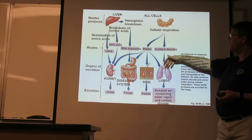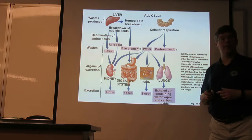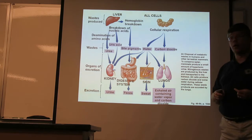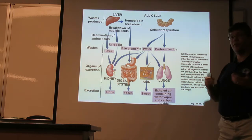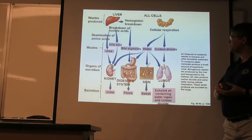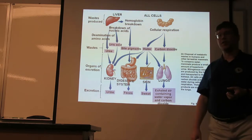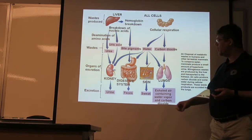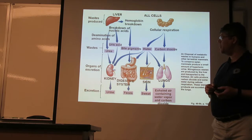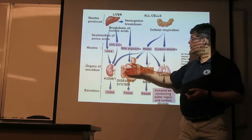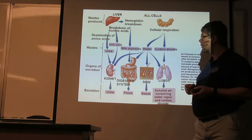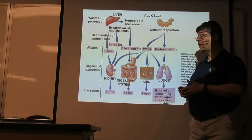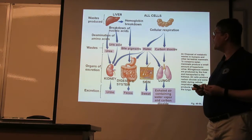Carbon dioxide, in land animals — vertebrates anyway — is typically largely expelled out through the lungs, carried through the blood, and then released there. Water, of course, we use some of it, but water also gets breathed out as water vapor, released as sweat from the skin, goes out through the feces via the digestive system, and also goes through the kidneys out the urinary system as part of the urine.